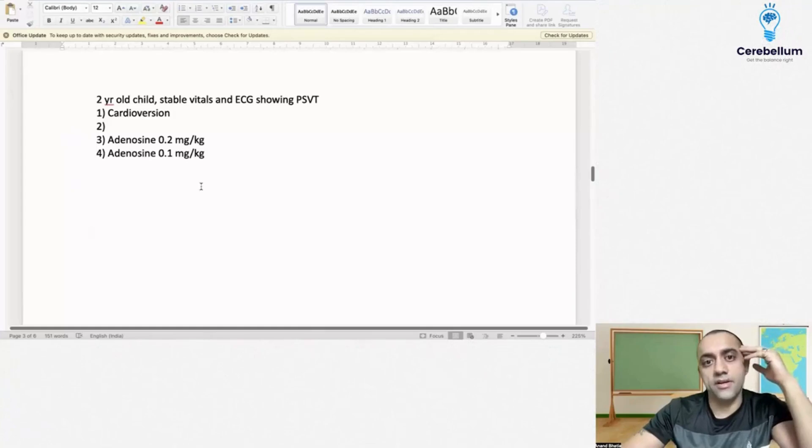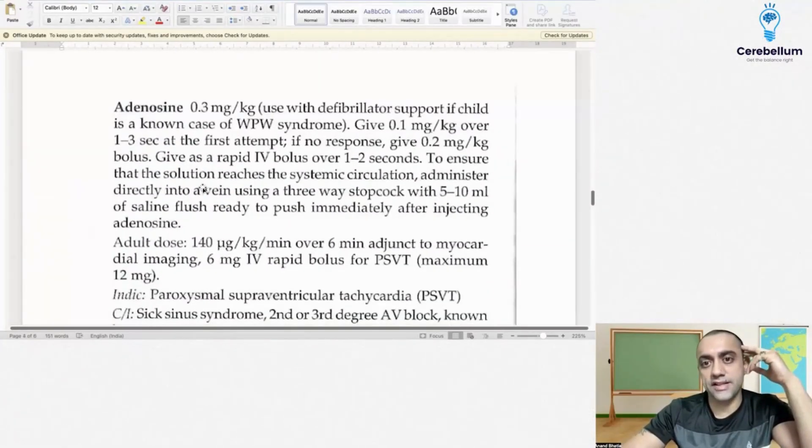Next question was two-year-old child came with vitals stable and showing this paroxysmal supraventricular tachycardia, for which we all know the drug of choice is adenosine. And we start off with 0.1 mg per kg. Remember always, this is the book picture. Second line, it is given.